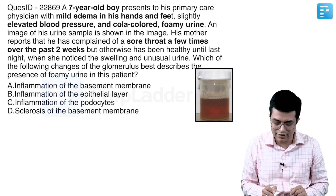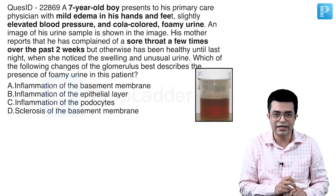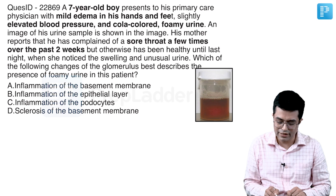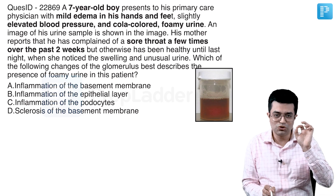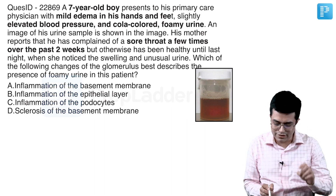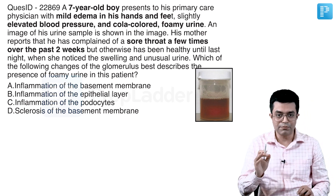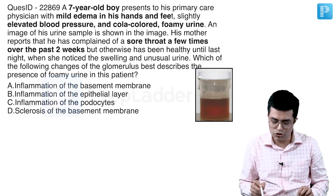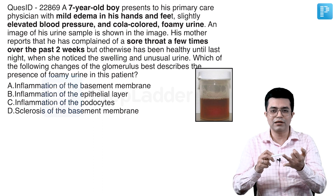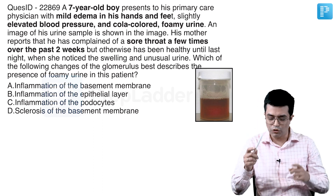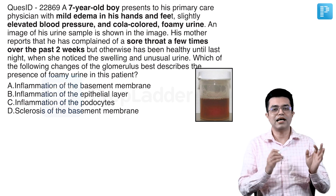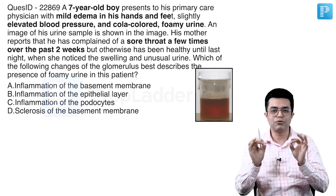As soon as you attempt this question, the keywords get highlighted. The highlighted keywords are: 7-year-old boy — a school-going age; mild edema in hands and feet; elevated BP indicating hypertension; cola-coloured urine suggestive of hematuria; foamy urine suggestive of proteinuria. So there is proteinuria, hematuria, edema, and hypertension in a school-going boy with a history of sore throat over the past 2 weeks — everything fitting into post-streptococcal nephritis.